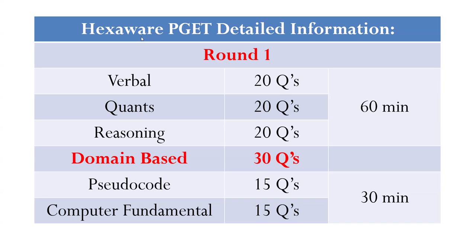All this comes under round one only. Round one altogether 90 minutes time. This quant, reasoning and verbal is taking 60 questions, 60 minutes. And pseudo-code and computer fundamentals is 30 questions, 30 minutes. All these are MCQs. People should be aware of how to handle pseudo-codes. Accenture has pseudo-codes. Capgemini also 25 questions is pseudo-code. Different companies are focusing more on pseudo-codes. You need to understand the importance of pseudo-codes.